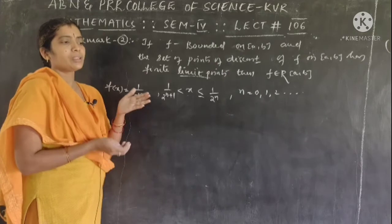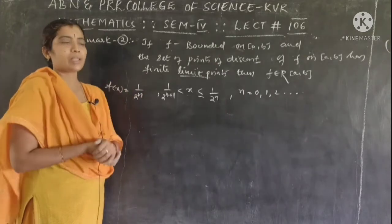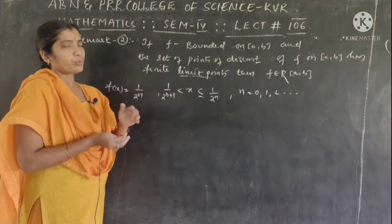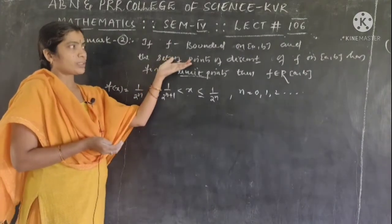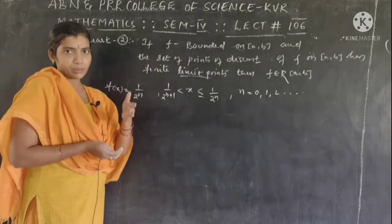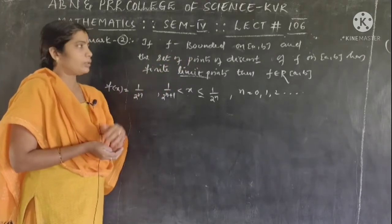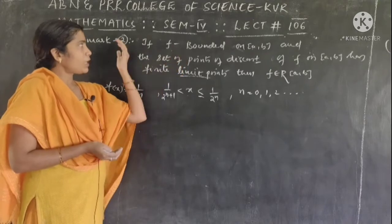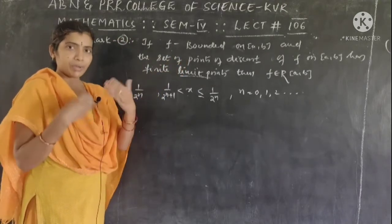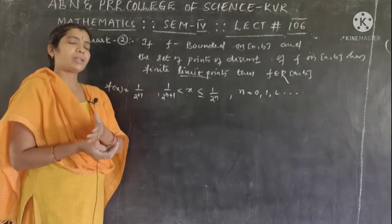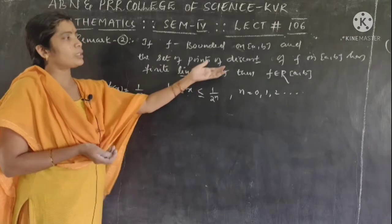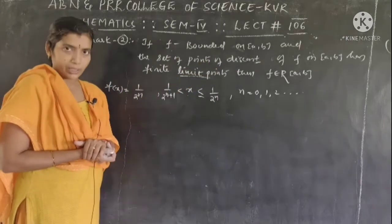The first remark is that the discontinuous points are finite. Here there is a restriction on the set of discontinuous points limits. If the infinite discontinuous points are finite, remark 1 applies. For the second remark, the discontinuous points are infinite, but if the limit is finite, then we can conclude that the function is Riemann integrable.